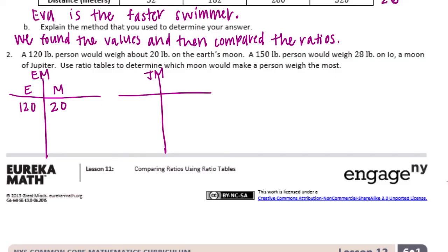On Earth a person weighs 150 pounds, but on Earth's moon they would weigh 25 pounds. On Jupiter's moon, a 150-pound person on Earth would weigh 28 pounds. I'm going to start with Earth's moon and scale this down.